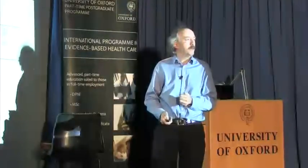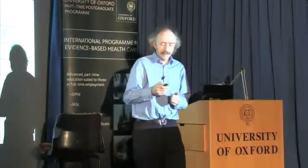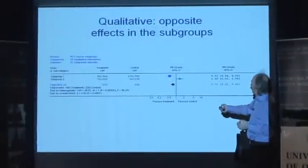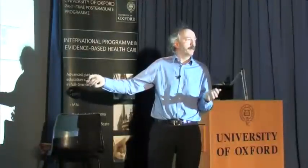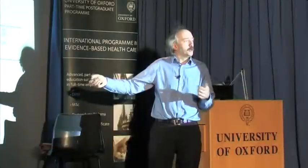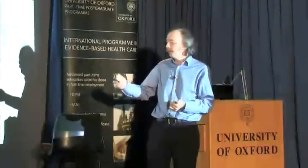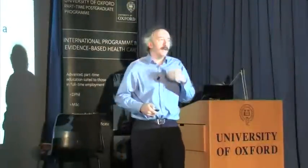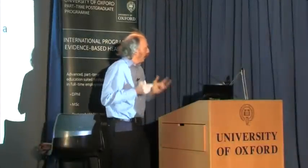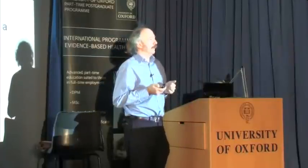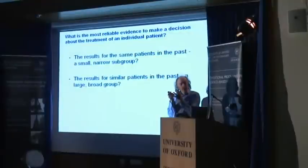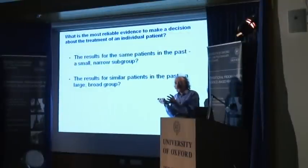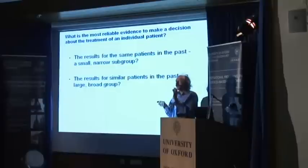An important point with these analyses is that we should be asking: is that result different from that result? In an example where they're miles apart, this is not just chance moving them apart, so we have to explore why — what has moved them apart. But then we have to ask ourselves: what is the most reliable evidence to make a decision about the care or treatment of an individual patient? Is it the overall average? Is it the result that is similar to that patient's characteristics? It's a tough ask, and there isn't an easy answer.